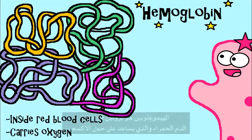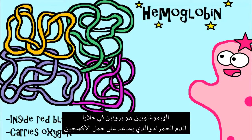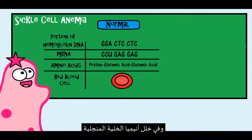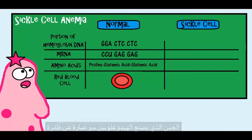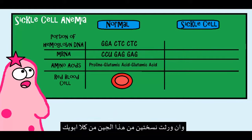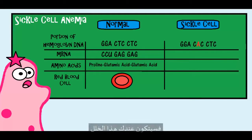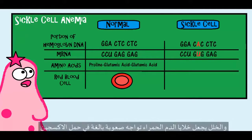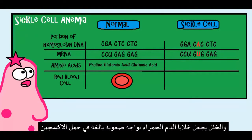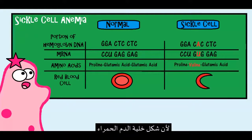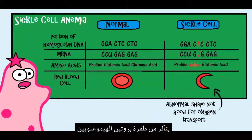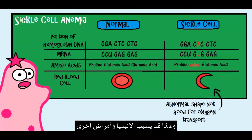Let's talk about sickle cell anemia. Hemoglobin is a protein in your red blood cells that helps you carry oxygen. In the disorder sickle cell anemia, the gene that codes for hemoglobin is mutated. If you inherit two copies of this mutated gene — one from each parent — you can have this disorder. The disorder makes it very difficult for your red blood cells to carry oxygen, because the shape of the red blood cell is affected by the mutated hemoglobin protein, which can lead to anemia and other problems.